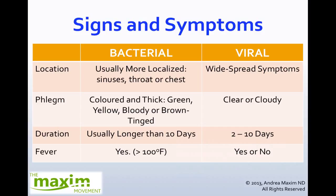When it comes to signs and symptoms of bacterial infections, we're finding that they're a lot more localized to the sinuses, to the throat, to the chest. We will often see phlegm, and that phlegm will be thick and different colored — whether green, yellow, bloody, or blood-tinged. The infection will often last longer than 10 days, so if you're finding you're just not able to recover as quickly as you'd expect to, it's most likely bacterial in nature. You will often have a fever, usually greater than 100 degrees Fahrenheit.